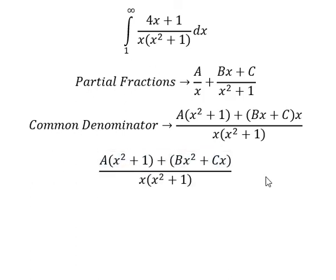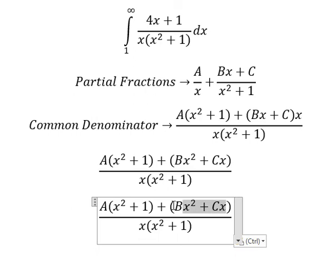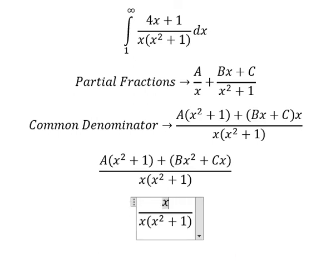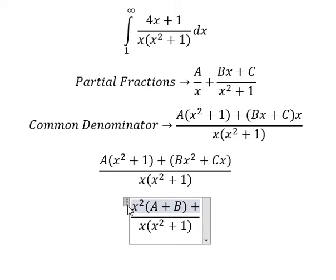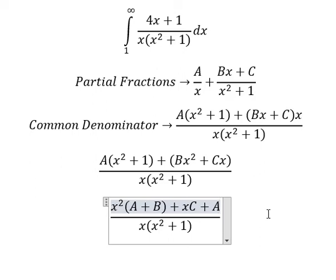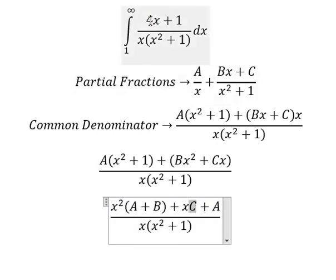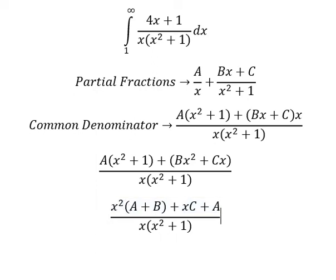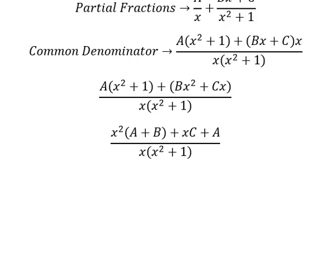Next we expand and arrange based on the terms of x. For x squared we have A plus B. For x we have C. For the constant terms we have A. Now we compare coefficients. For the x term, C equals 4. For the constant, A equals 1. Since there is no x squared term, A plus B equals zero.